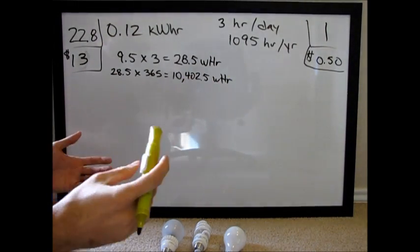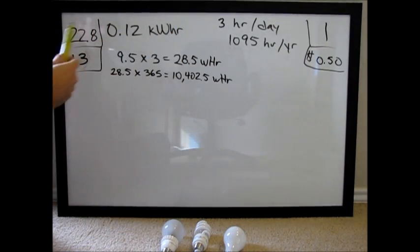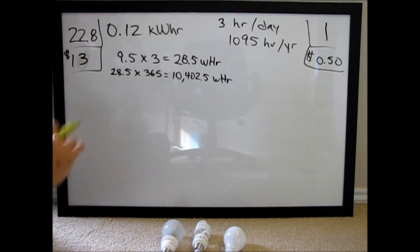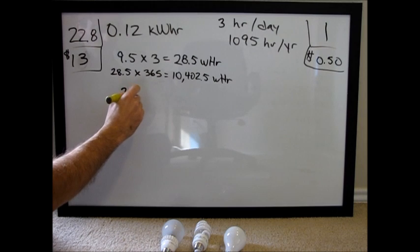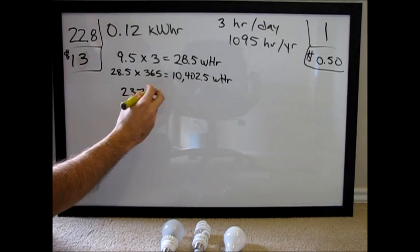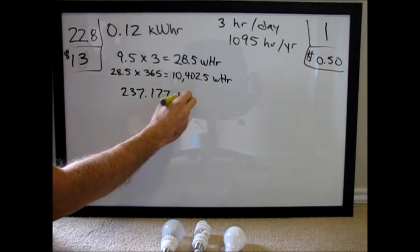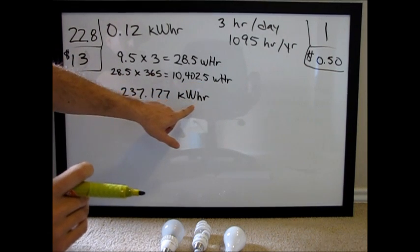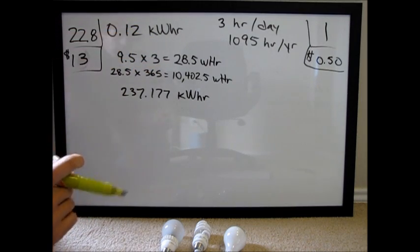Okay, let's convert that for the whole life, for the sake of argument, we're going to compare these at 22.8 years, because that's the full life cycle of an LED bulb. So let's multiply this times 22.8, I'm not going to write all that out, but it's 237.177 kilowatt hours. So we've converted units from watt hours to kilowatt hours, because we want to get to where we can calculate the cost of the electricity.